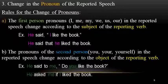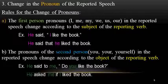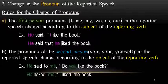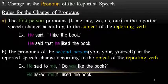The next rule: change in the pronoun of the reported speech. First person pronouns — I, me, my, we, us — in the reported speech change according to the subject of the reporting verb. For example, he said, 'I like the book.' In reported speech: he said that he liked the book. Since the same person is addressed, 'I' changes to 'he'.